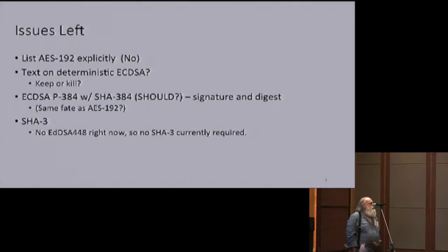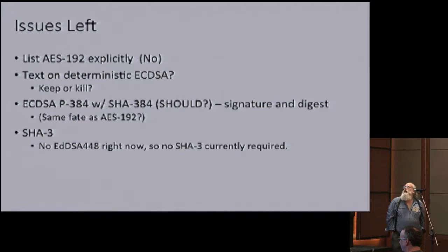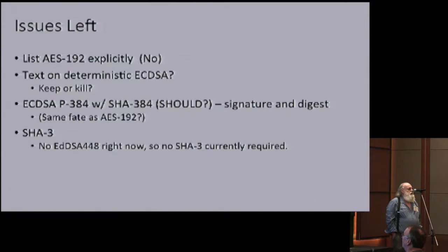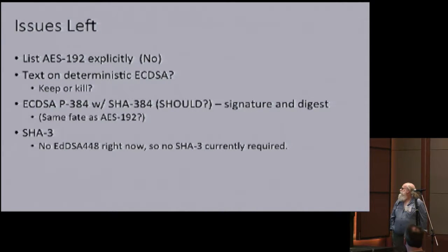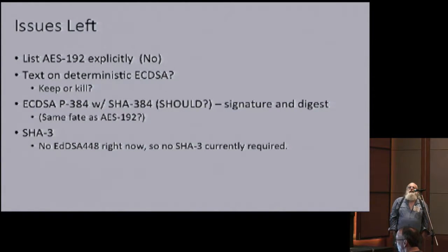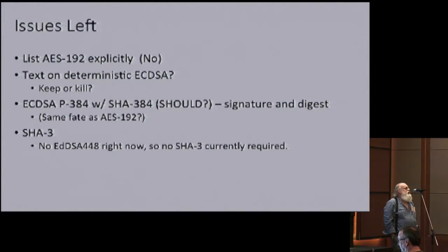I inserted text on deterministic ECDSA, which says use it if you have it because it's much, much better. If anyone objects to that text, please say so — otherwise it will stay. The text says signers should use it, but validators can't tell whether the signer used it or not. It's really a 'should' for signers. If you can figure out how to check on the receiving end, I'll give you a math prize.